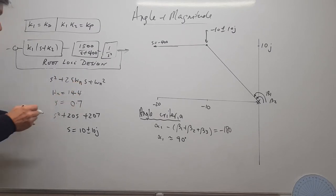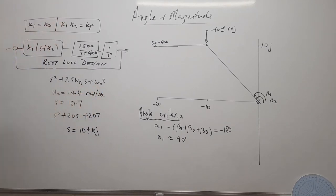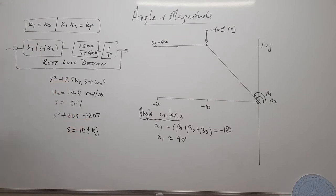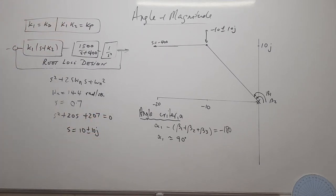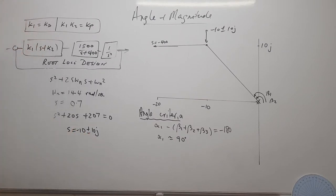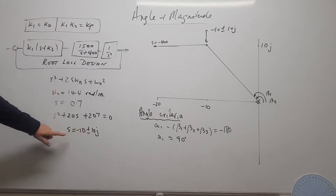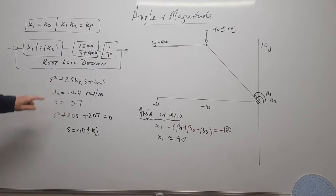With ωn = 14.4 and ζ = 0.7, the characteristic polynomial becomes s² + 20s + 207, giving roots at −10 ± 10j. This is our design point: a damping ratio of 0.7 and a natural frequency of 14.4 rad/s. We now plot this on the imaginary-versus-real plane with scale of 10.